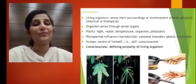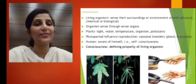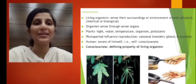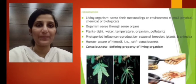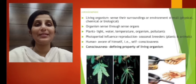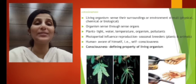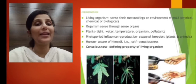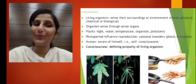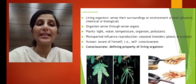Animals respond to stimuli with the help of sense organs. They sense changes in the environment with sense organs, and after processing by the central nervous system, they give an appropriate response. Some organisms are seasonal breeders — they reproduce seasonally, and their reproduction is influenced by photoperiod. Photoperiod is the response of organisms to seasonal variations in accordance with daylight.